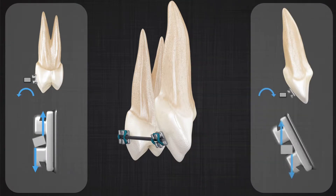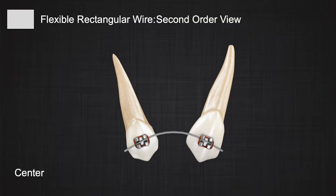Both teeth will receive equal and opposite moments in the third-order view. So any time you are changing the angulation of the wire by adding torque to the wire, remember: the target tooth receives the moments you want, but the adjacent teeth will receive a moment in the opposite direction that you may not want.